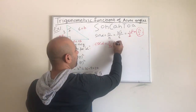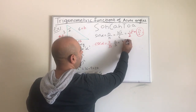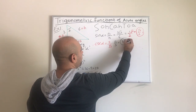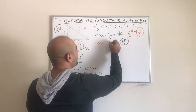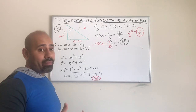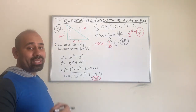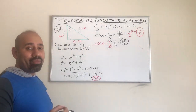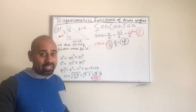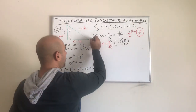We multiply by radical 3 over radical 3, and that becomes 2 radical 3 over 3. Please do not leave it as 2 over radical 3 — we cannot have a radical in the denominator. We multiply the numerator and denominator by the square root of 3, which is rationalizing the denominator. That takes care of two of the trig functions.